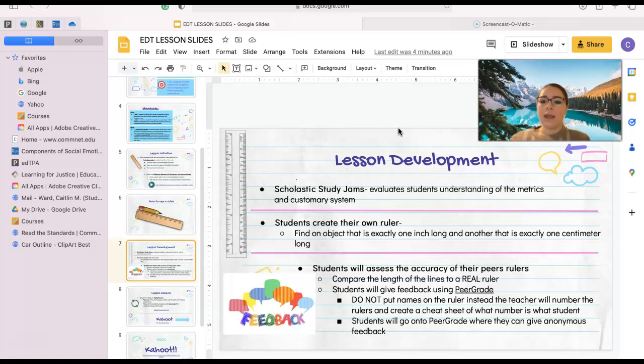And you are going to find an object that is exactly one inch long in the classroom and another object that is exactly one centimeter long. So when you are creating this ruler, you are going to find these objects first and foremost, and then you're going to use the object to make little tick marks on the piece of paper that I gave you, and write above it one, two, how many objects it is, which will create your ruler.